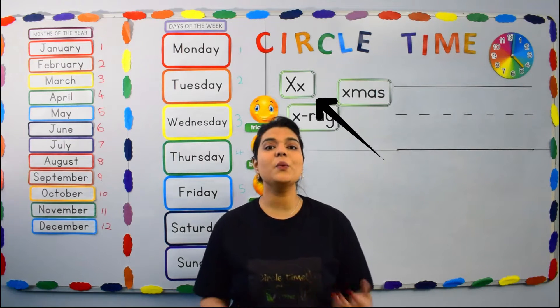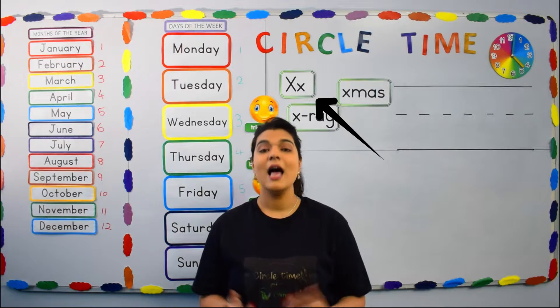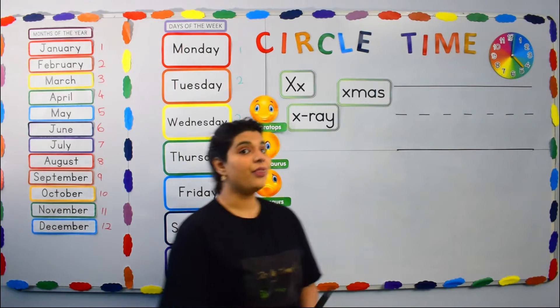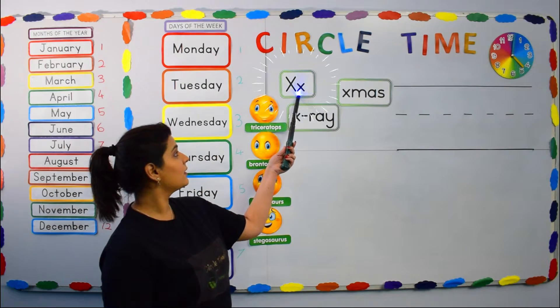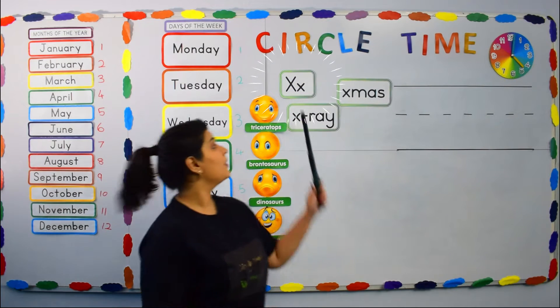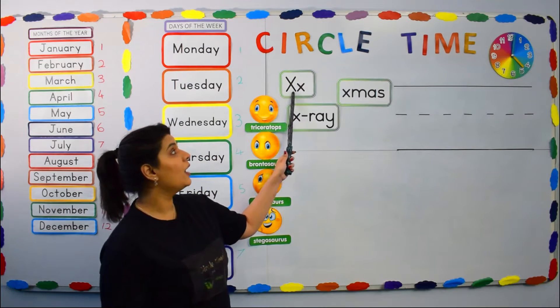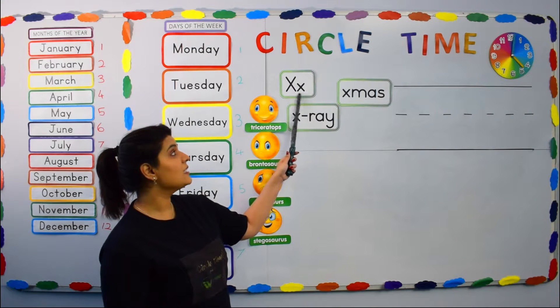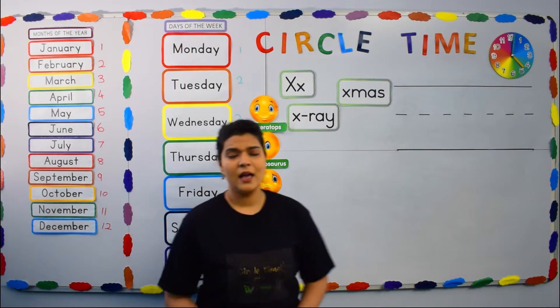After letter W, we have letter X. Letter X. This is letter X. This over here is big letter X. And this is small letter X.